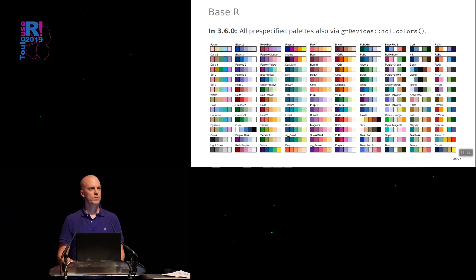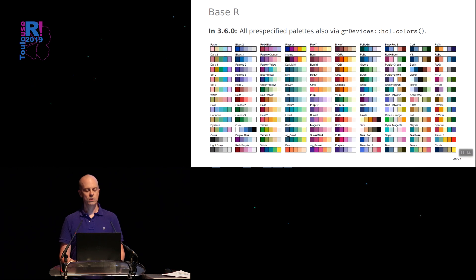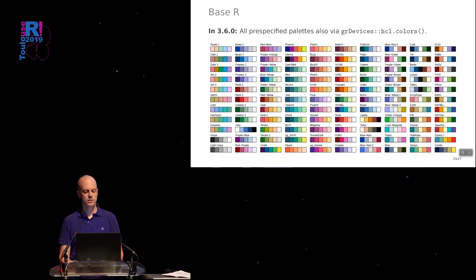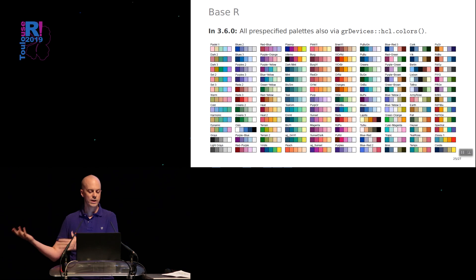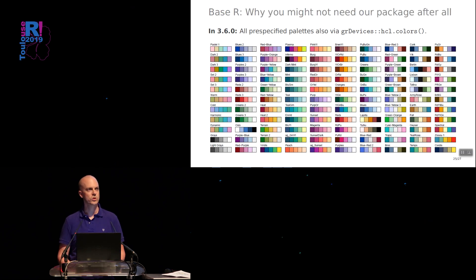Now I come to my second point from the beginning. After we had done all this, I convinced my R Core co-authors that it would be a good idea to have these fixed palettes also in base R. This came out earlier this year: in grDevices there's now the hcl.colors function. It only has the fixed palettes — you can't tweak them, so if you want that you need colorspace — but if you just want a palette like viridis it's now in base R. So maybe this slide should be titled 'why you maybe don't need an R package after all.'